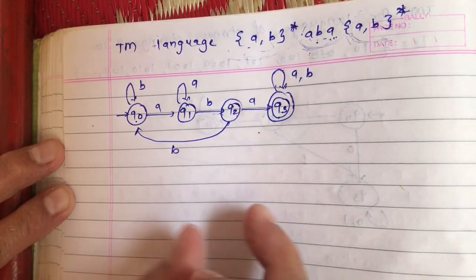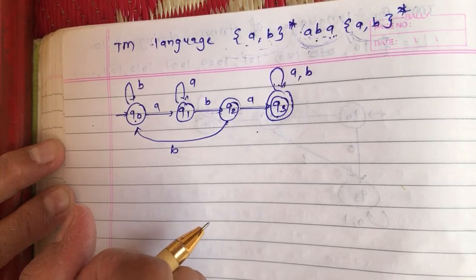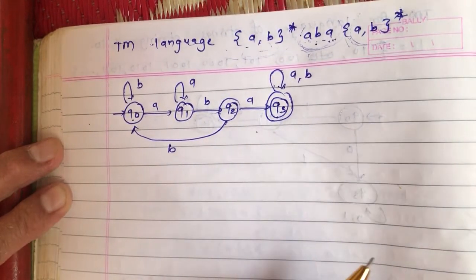Write its five-tuple and solve one ID notation for one of the strings which you have to upload in the assignment section.